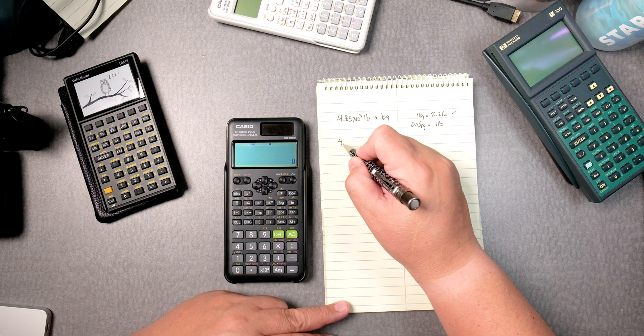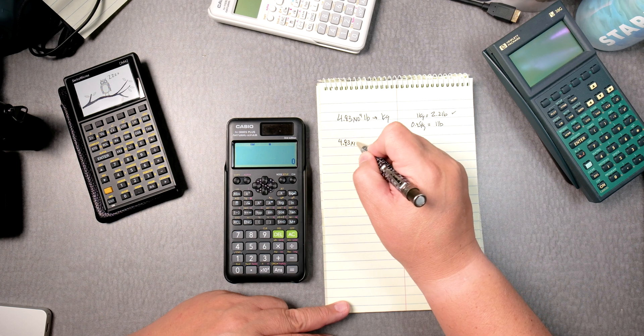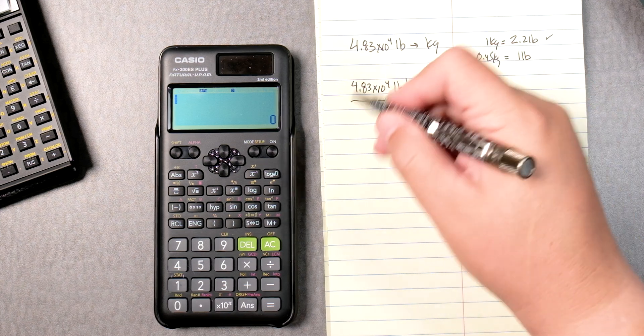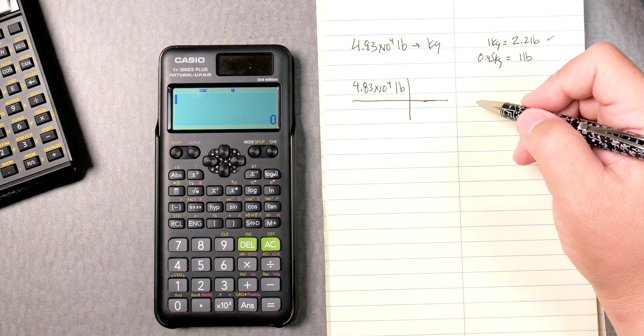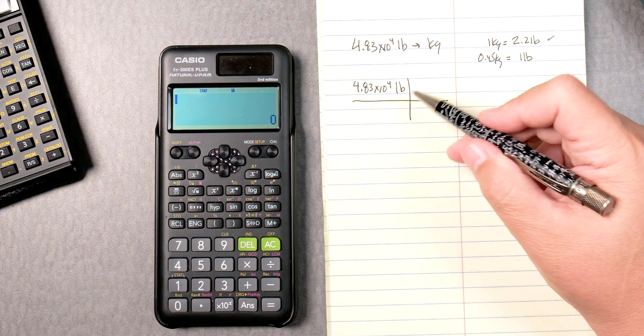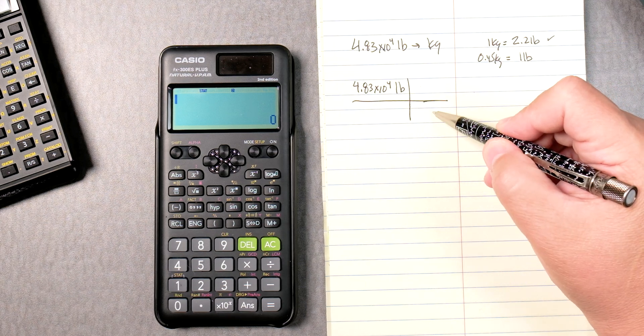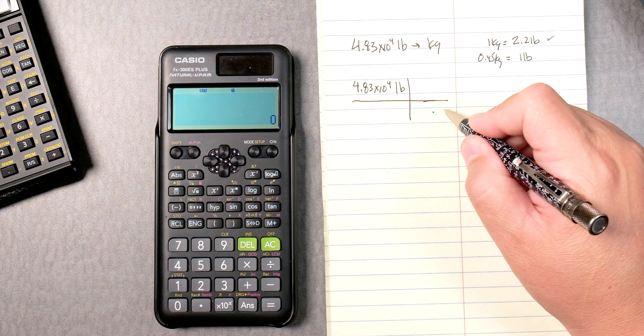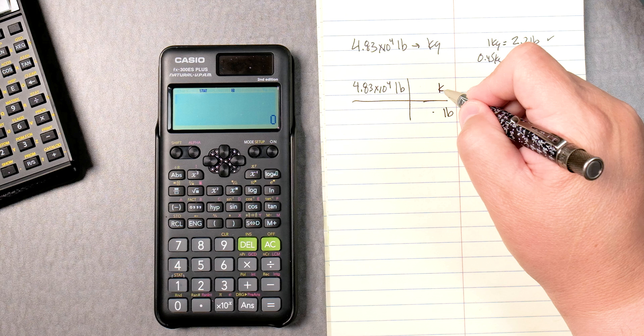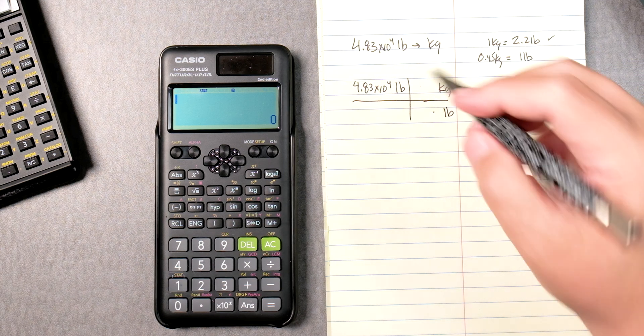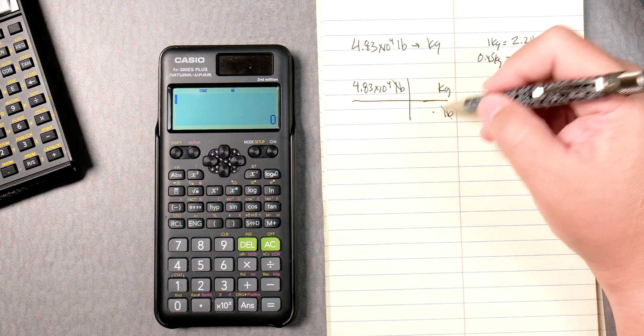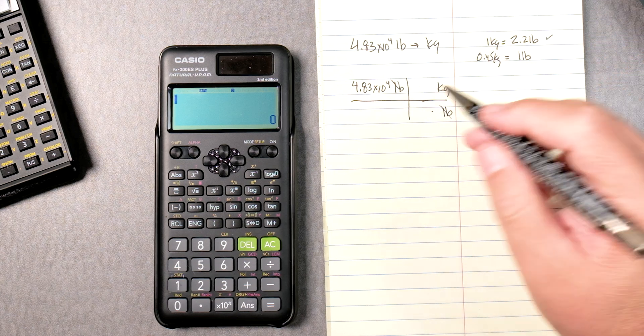So, 4.83 times 10 to the fourth pounds. How many kilograms? We do this cross here. We have pounds here on the top. What we want to do is go diagonal to that and we want to put the conversion of pounds down here and on the top we want kilograms. Because we're going to cross out the pounds here, and then we multiply and divide to get the kilograms in the end.